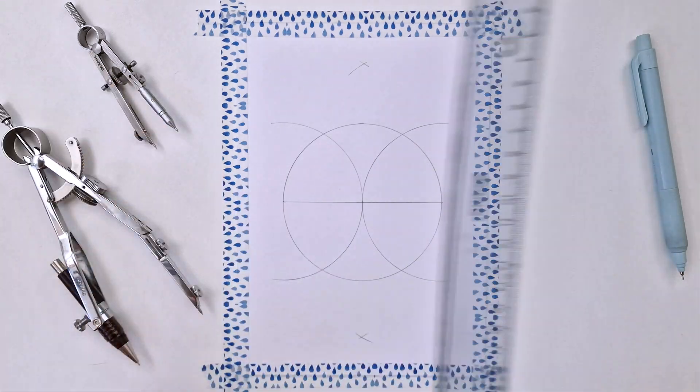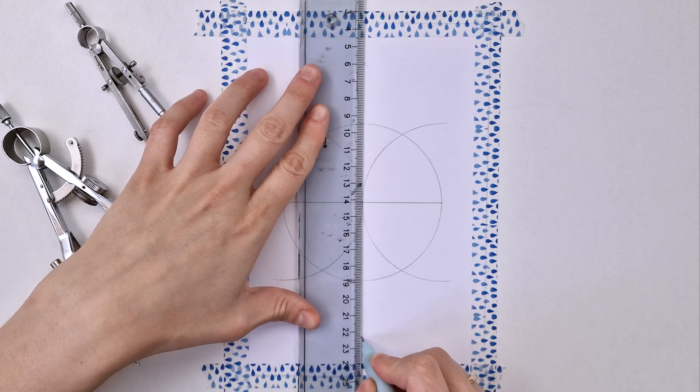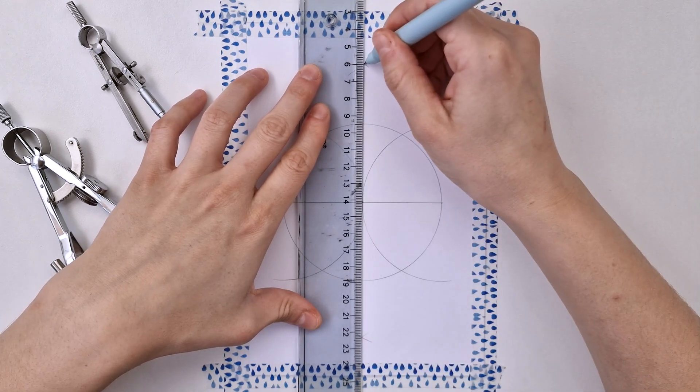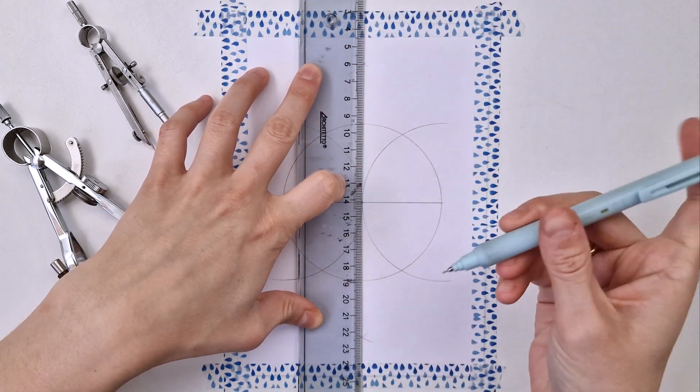Next, I'm aligning my ruler to the intersection of those four marks and drawing my vertical line. Again, make sure it passes through the center.